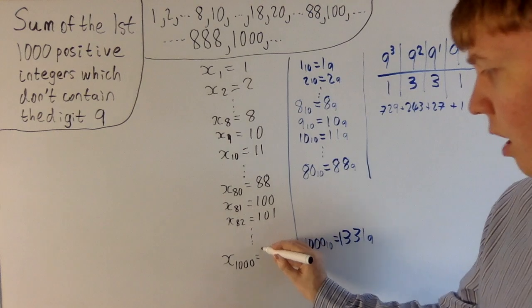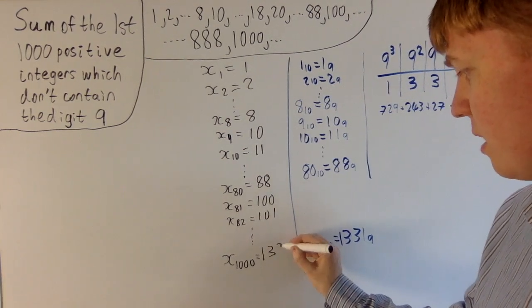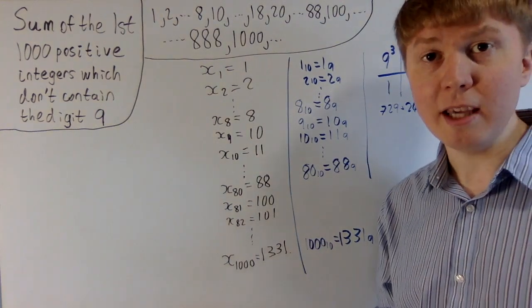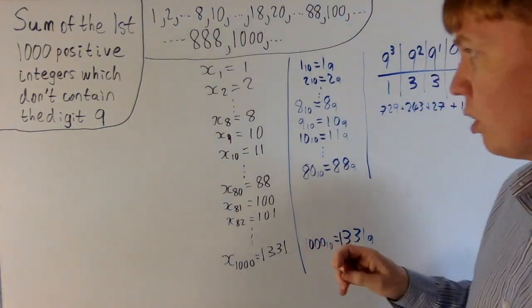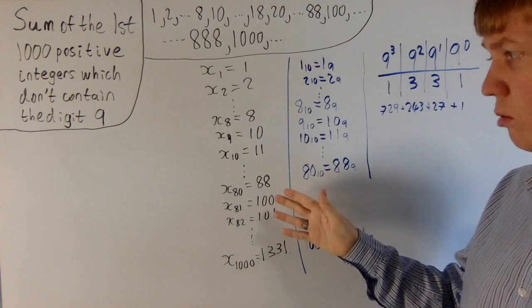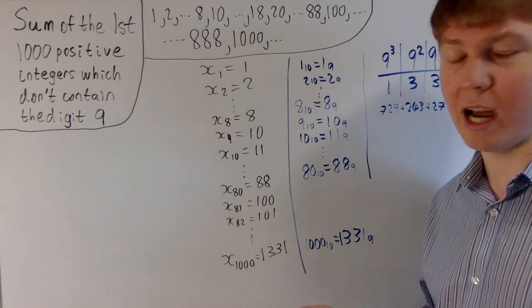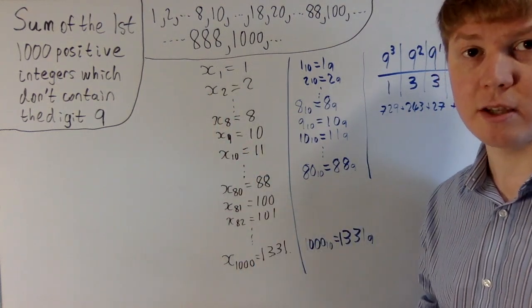So that tells us that our 1,000th term in the sequence is 1,331. And we're going to be able to take advantage of this structure. We've got this one-to-one correspondence between elements in our sequence and representations of integers in base 9. So we'll use this to our advantage now to try and solve the problem of this sum.